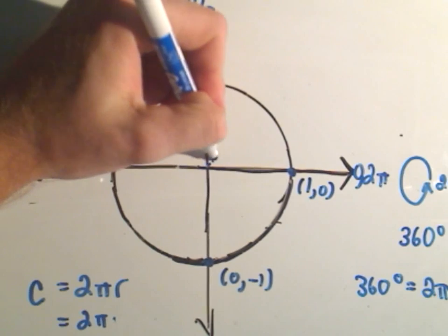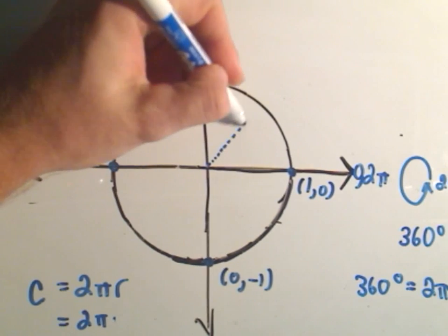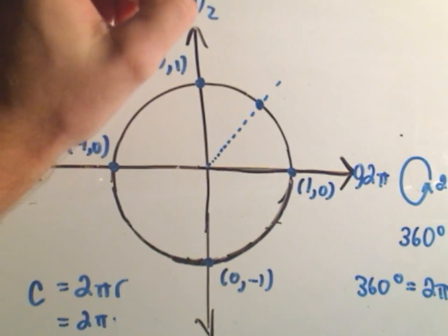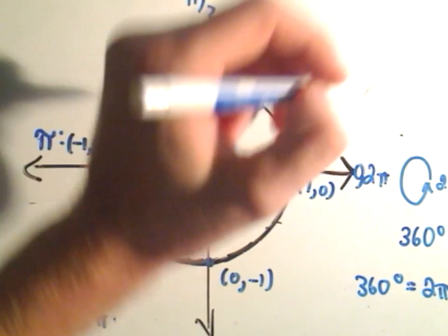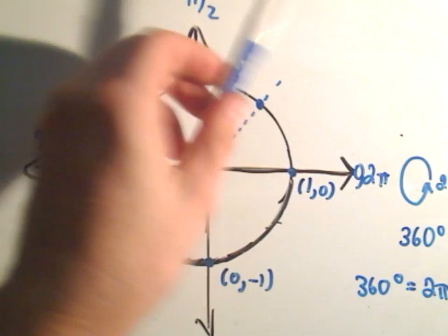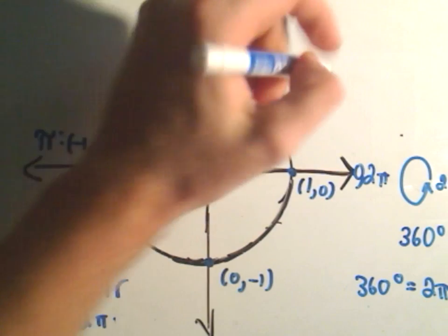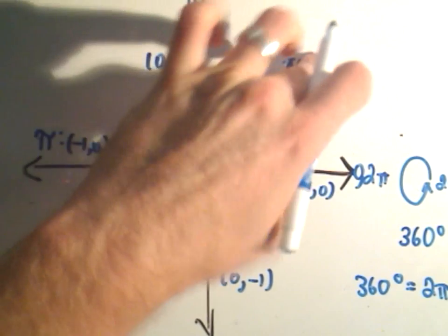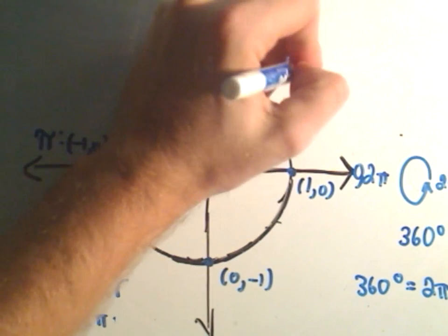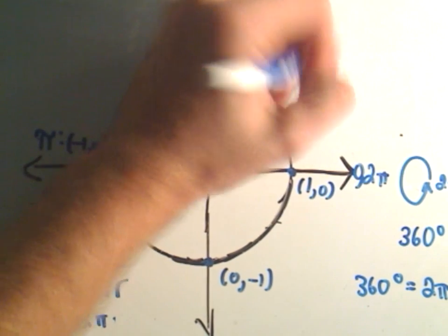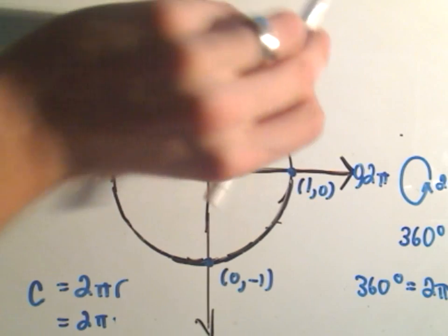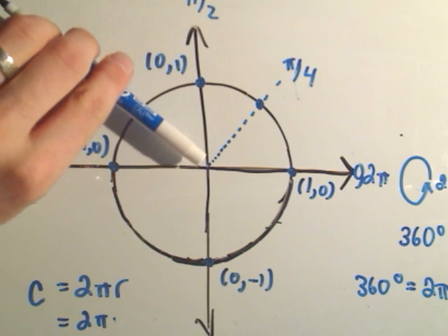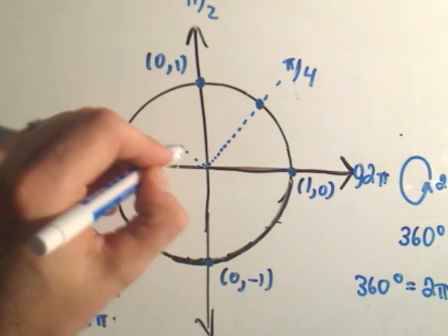If you cut the first quadrant in half — between angle 0 and π/2 — that must be π/4. So counting up: π/4, 2π/4 which is π/2, and then 3π/4.